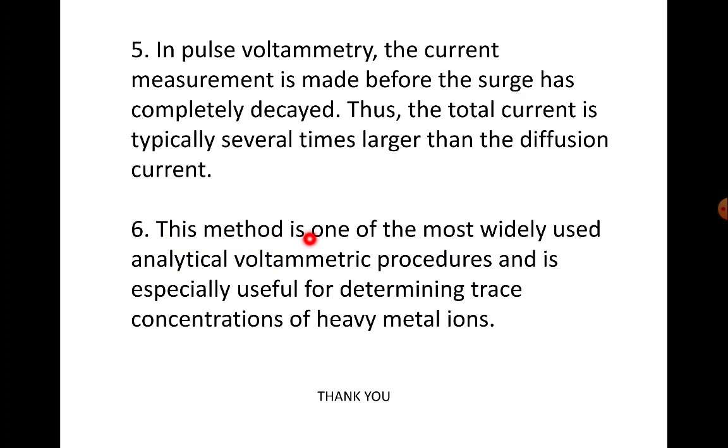This method is one of the most widely used analytical voltammetric procedures and is especially useful for determining trace concentrations of heavy metal ions. This method, differential pulse voltammetry, also called DPV, is useful for trace concentrations, meaning where very low amounts are present, for determining very low concentrations of heavy metal ions. This method is very useful.